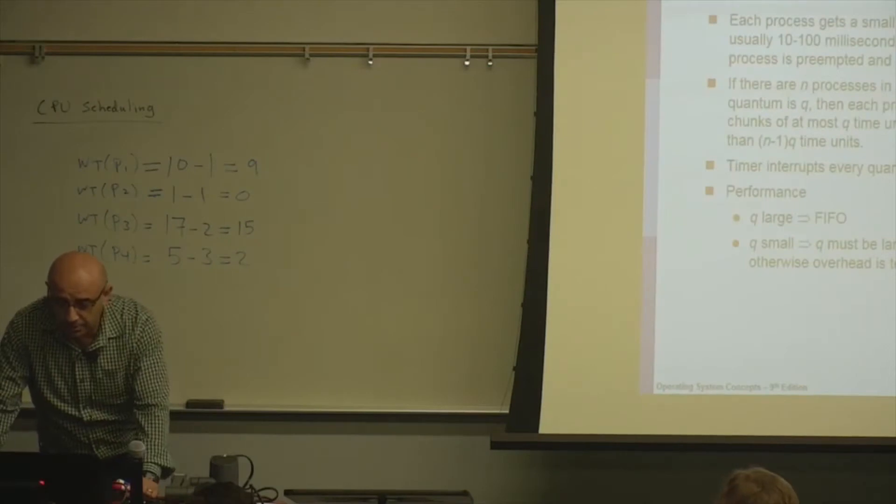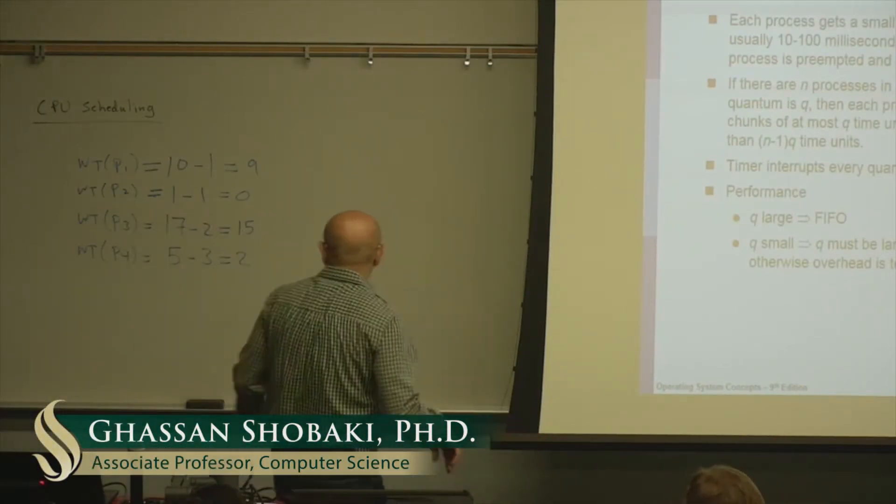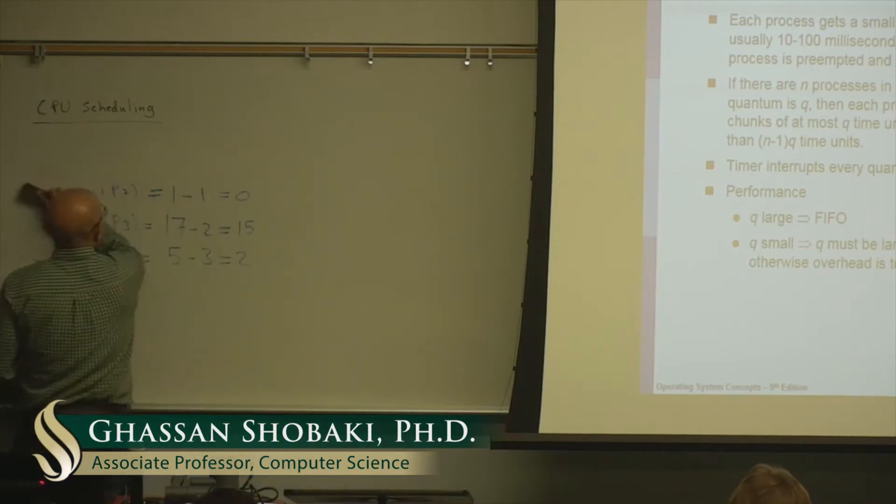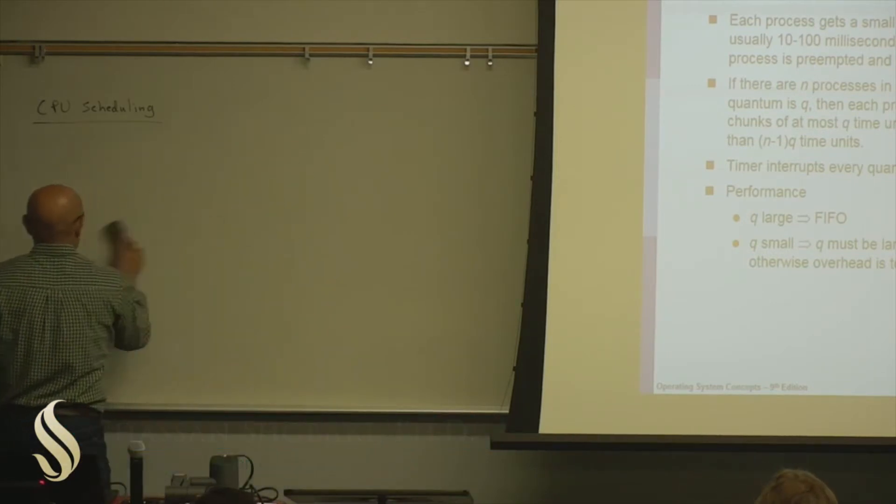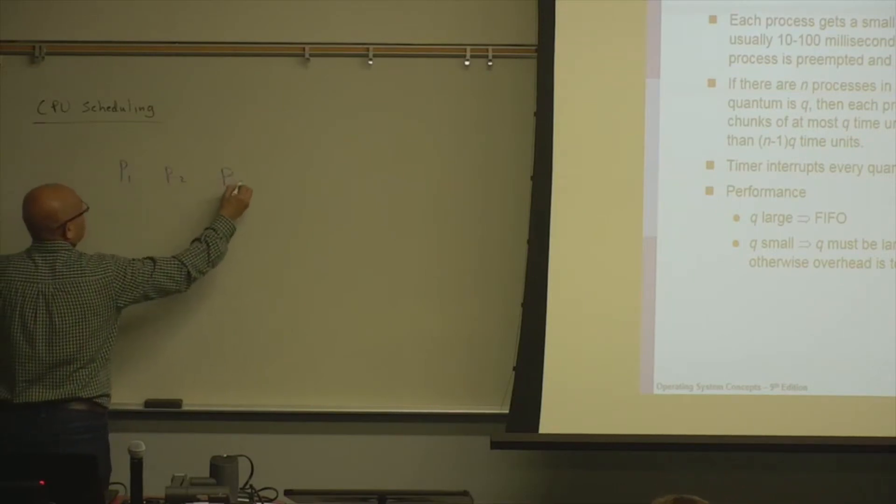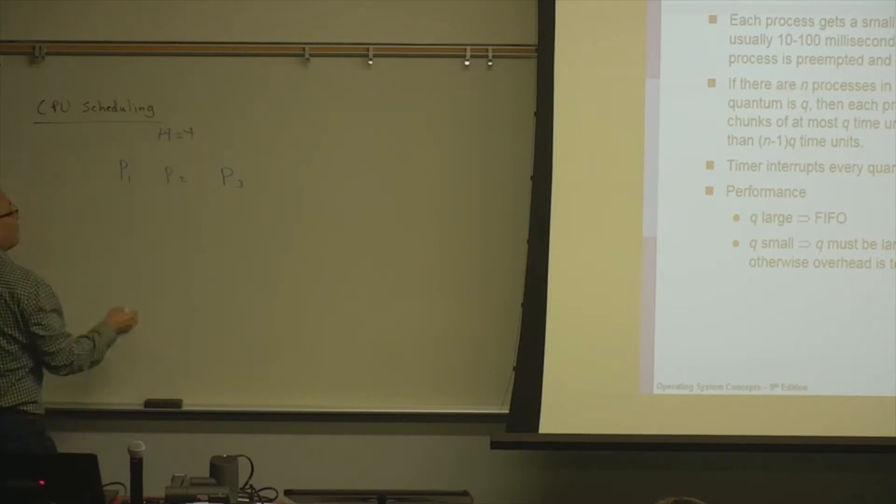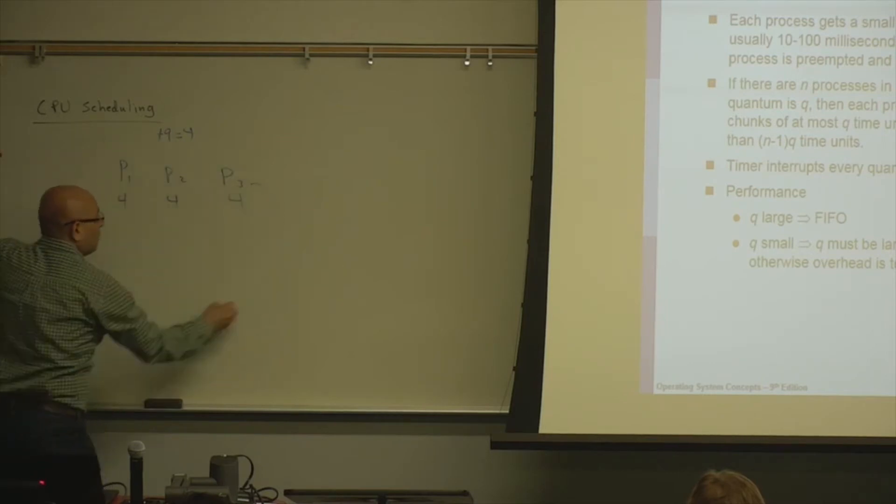Another basic algorithm that operating systems use is round robin. Round robin is if you have processes P1, P2, and P3, and your time quantum is 4, so you give 4 time units to P1, then you give 4 time units to P2, then you give 4 time units to P3.